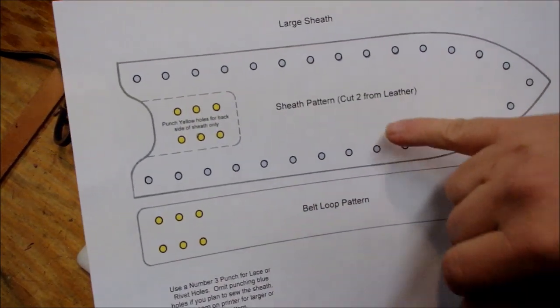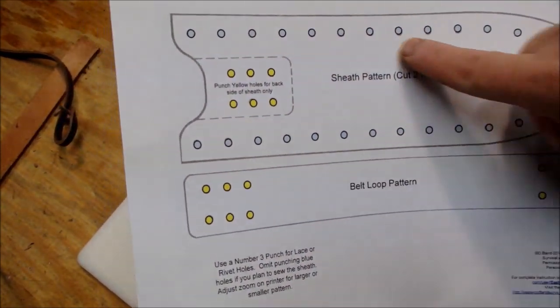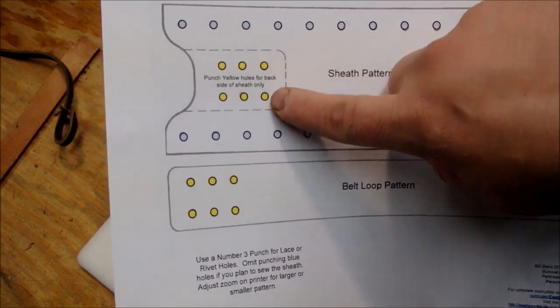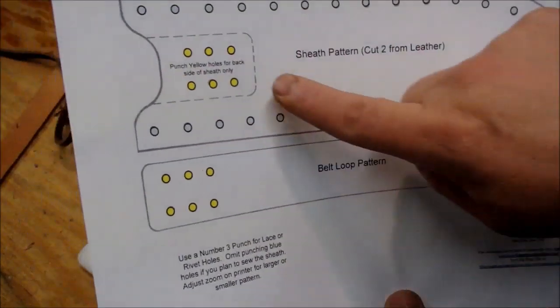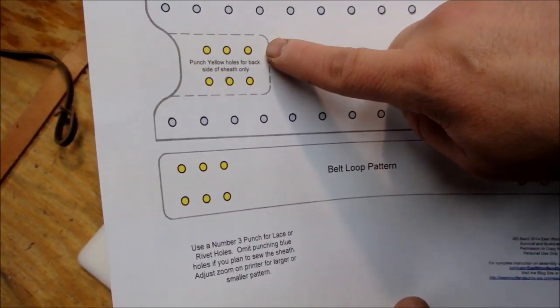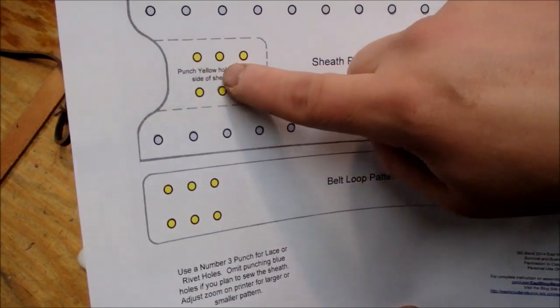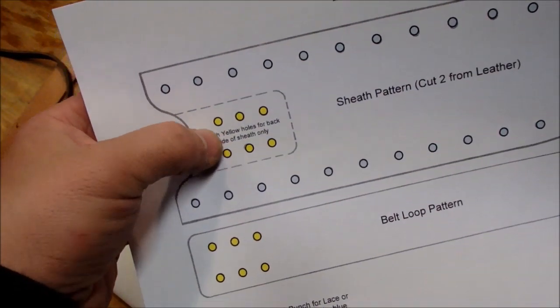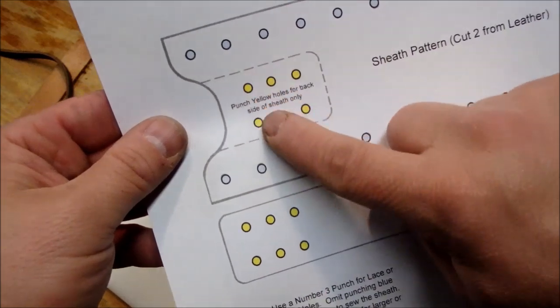Okay guys, just to explain the pattern a little bit. You're going to actually need to cut two of these pieces. These entire pieces. One for the front, one for the back. You're only going to punch holes in the back, because this is where the belt loop is going to attach to. So you only want to punch the yellow holes in the back of the sheath only. And you want to punch all holes. I put extra rivets in here.